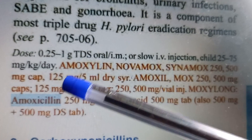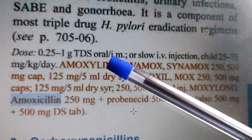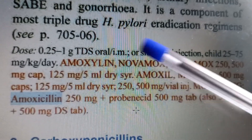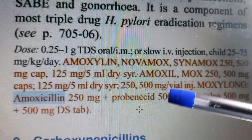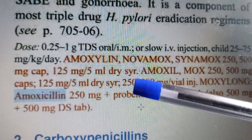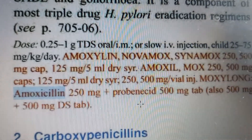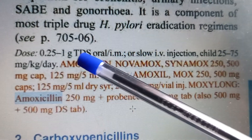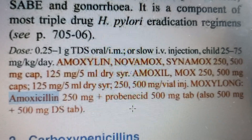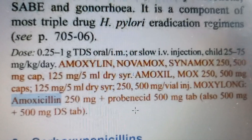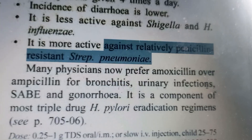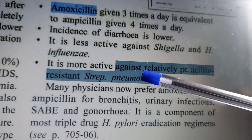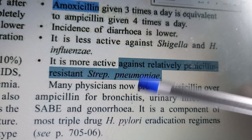Amoxicillin can be given orally, by IM injection, or even by slow IV. You must always give a test dose first, because this is a semi-synthetic penicillin and allergic reactions are possible. The dosing is thrice daily.